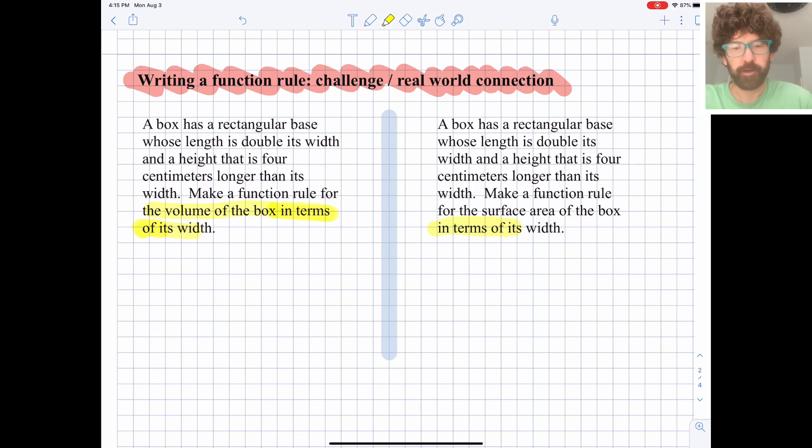So let's do the one on the left first. A box has a rectangular base whose length is double its width and a height that is 4 centimeters longer than its width. So make a function for the volume of the box in terms of its width. So this is going to tell us what we want our main variable to be. We want everything to be in terms of width, and hopefully we'll be able to kind of get rid of the length and the height terms. I think I need to draw a picture here first, so let's see if I can draw a 3D box real quick.